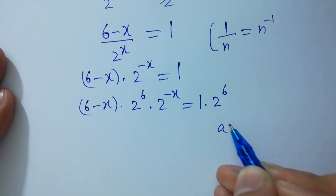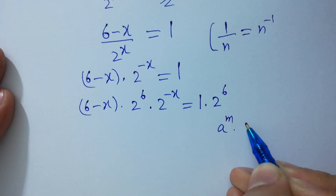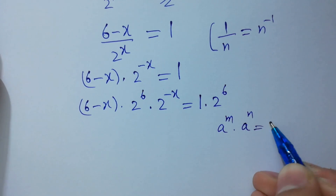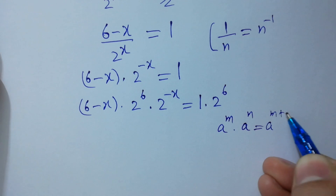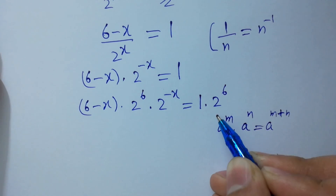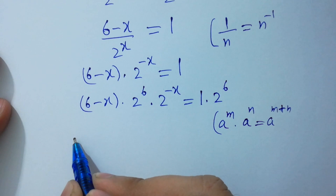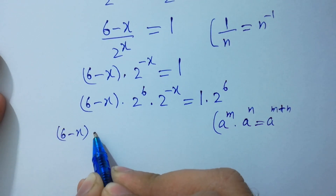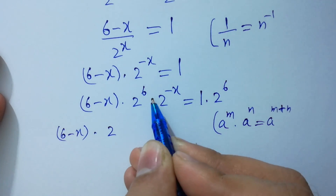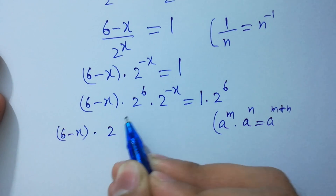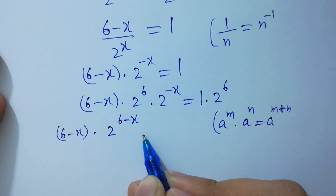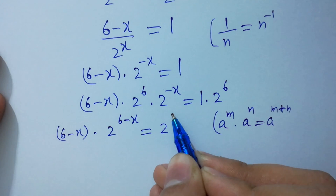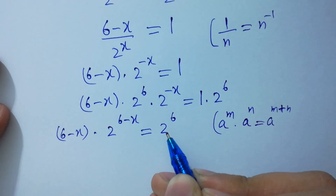Since a to the power m times a to the power n equals a to the power m plus n, we get 6 minus x times 2 to the power 6 minus x equals 2 to the power 6. I hope you understood.